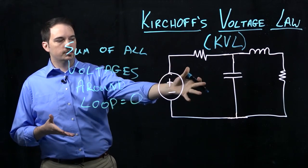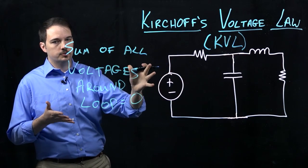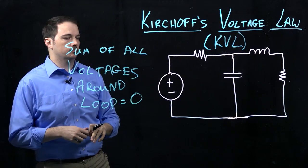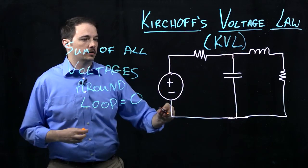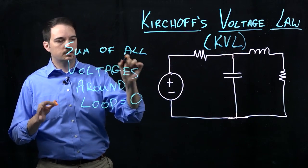So if we look at a circuit such as the one that we have here, we could actually define a variety of different loops to write equations that describe Kirchhoff's Voltage Law around a given loop. A loop is simply defined as I have to start and stop at the same point.